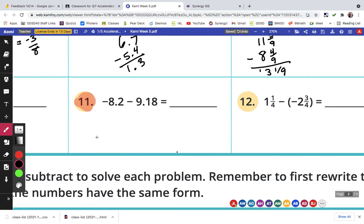And number 11 was requested, negative 8.2 plus a negative 9.18. That means we're going to add these two together. 8.2, 9.18.